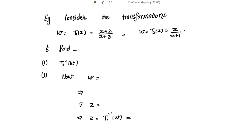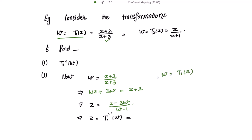First we have to find t1 inverse. For t1, w is equal to (z + 2) over (z + 3). Taking (z + 3) to the other side, it multiplies with w and we get wz + 3w = z + 2. Solving this to get z in terms of w, we get z equal to (2 - 3w) over (w - 1). We know that w = t1(z), so taking t1 to the other side gives t1 inverse(w) = z.